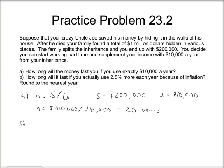For part B, we want to look at how long it will last if you actually use 2.8% more each year because of inflation. This is the exponential reserve problem and we're going to round to the nearest year. S is still $200,000 and U is still $10,000. Now we have a rate of increase R, which is 2.8%, or 0.028 in decimal form.